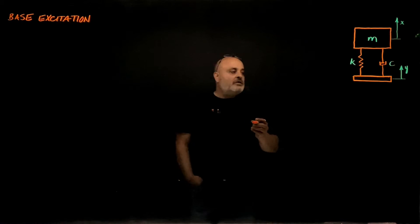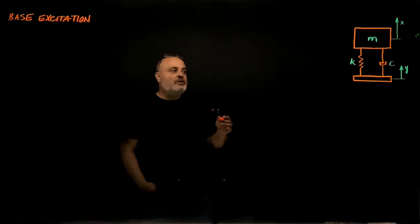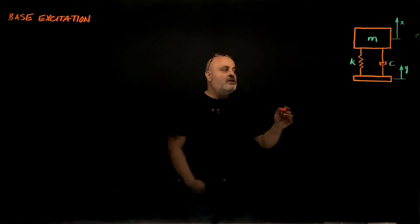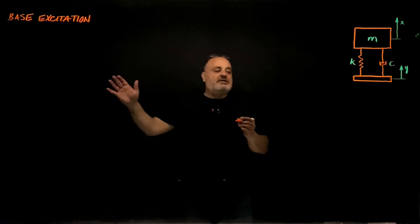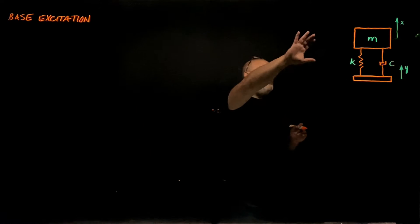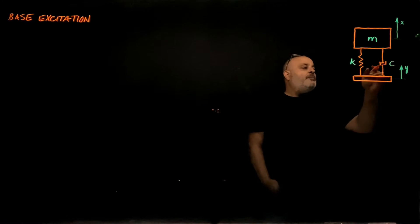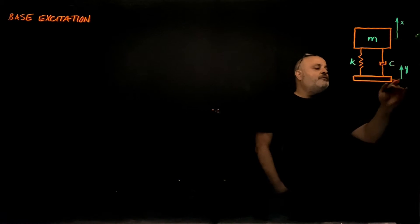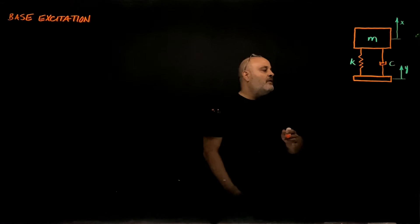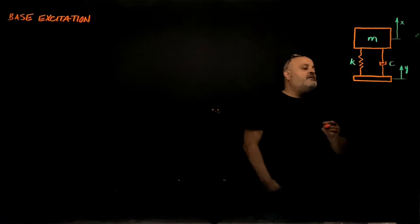Now let's consider the case where the mass is mounted on a moving base — call it base excitation. We have a mass M mounted on a base through a spring and a damper, and the base moves in the vertical direction where the displacement of the base is y and the motion of the mass is x.